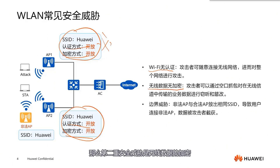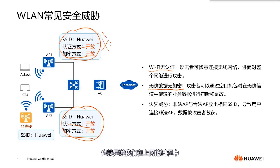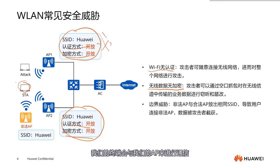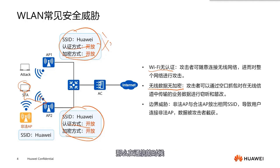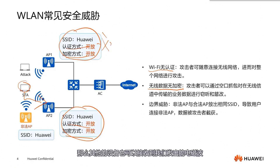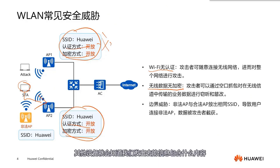The second layer of security threat is wireless data encryption. During our online activities, our STA (our terminal) communicates with our AP. During communication, if our data is not encrypted, other devices can also receive the electromagnetic waves we transmit. If it's not encrypted, other devices will know what content our transmitted information contains, and our privacy may be unintentionally intercepted.